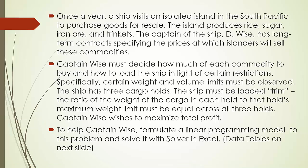Once a year, a ship visits an isolated island in the South Pacific to purchase goods for resale. The island produces rice, sugar, iron ore, and trinkets. Captain Weiss has long-term contracts specifying the prices at which islanders will sell these commodities. Captain Weiss must decide how much of each commodity to buy and how to load the ship, given certain restrictions — specifically, certain weight and volume limits must be observed.